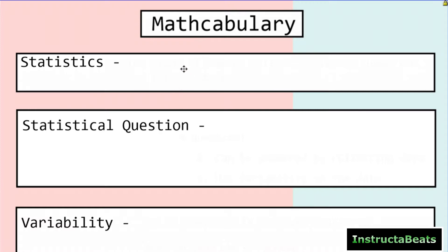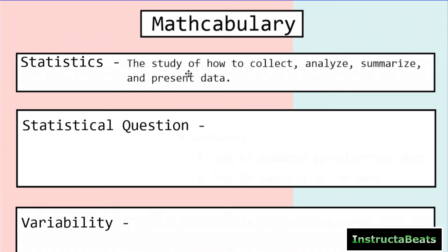The first word is statistics. What is statistics? Statistics is a study of how to collect, analyze, summarize, and present data. Basically, we're going to be collecting data, looking at ways to analyze it, to summarize it, to make inferences about it, and then how to present it visually so that other people can see the conclusions we're making, which leads us into a statistical question.